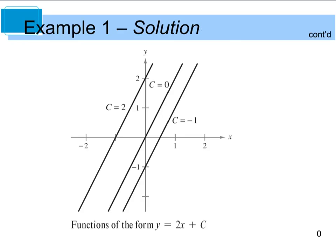Just so you have an idea of the role C plays: all these lines have the same slope of 2. Without knowing more information, we have to include the plus C — and yes, you will get points deducted if you don't. We have to include it because we don't know which line we're looking at since they all have the same slope.